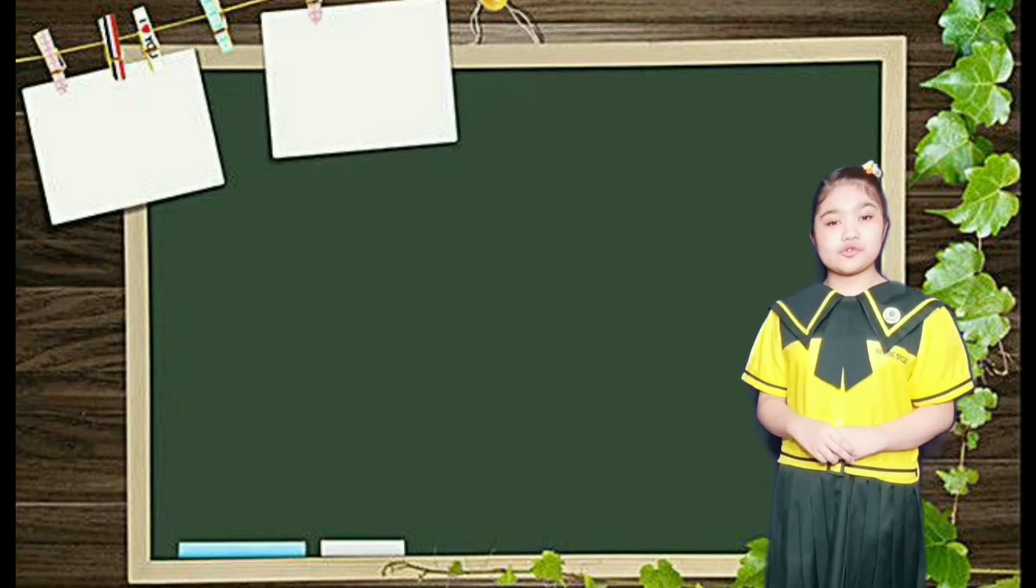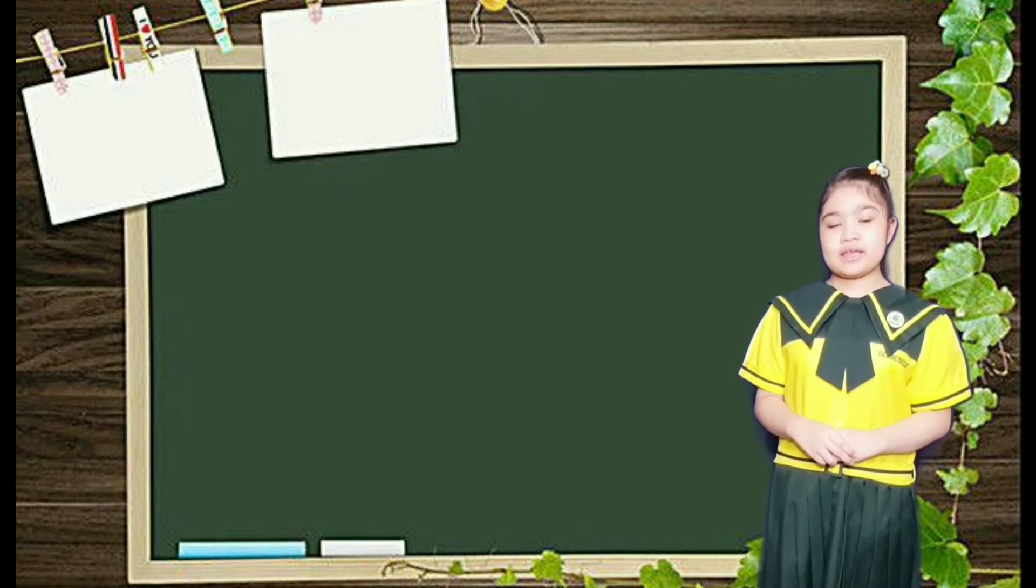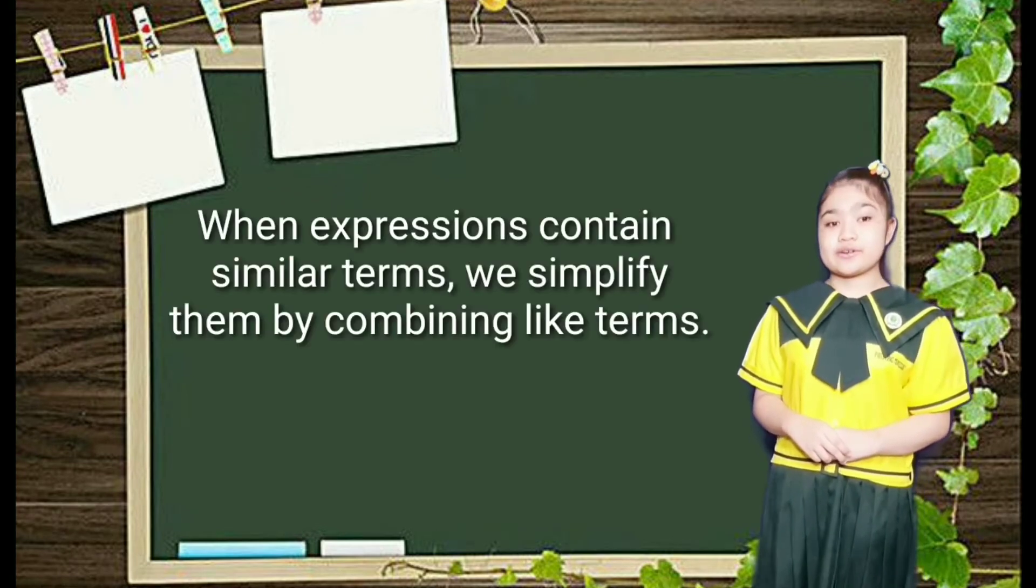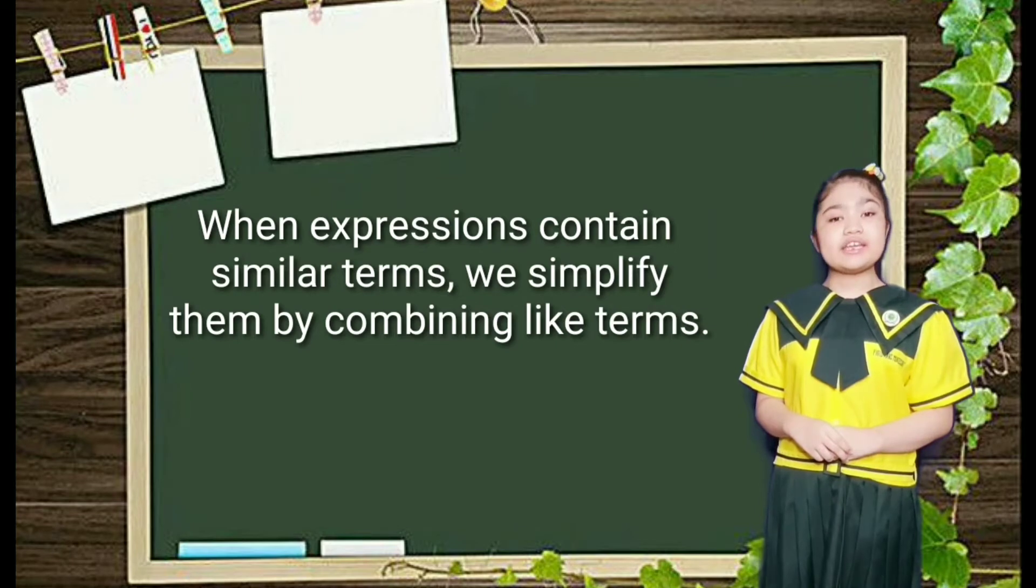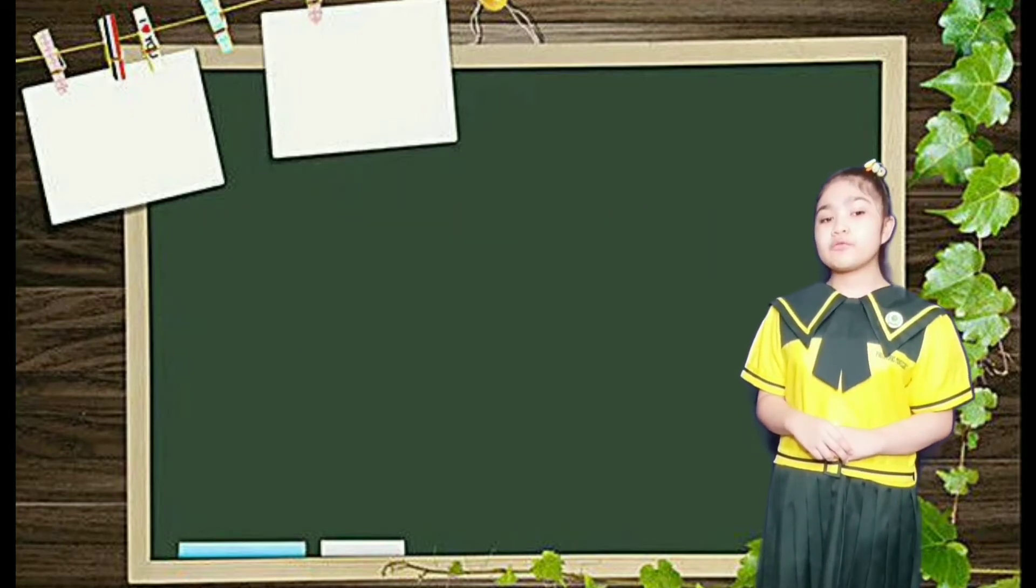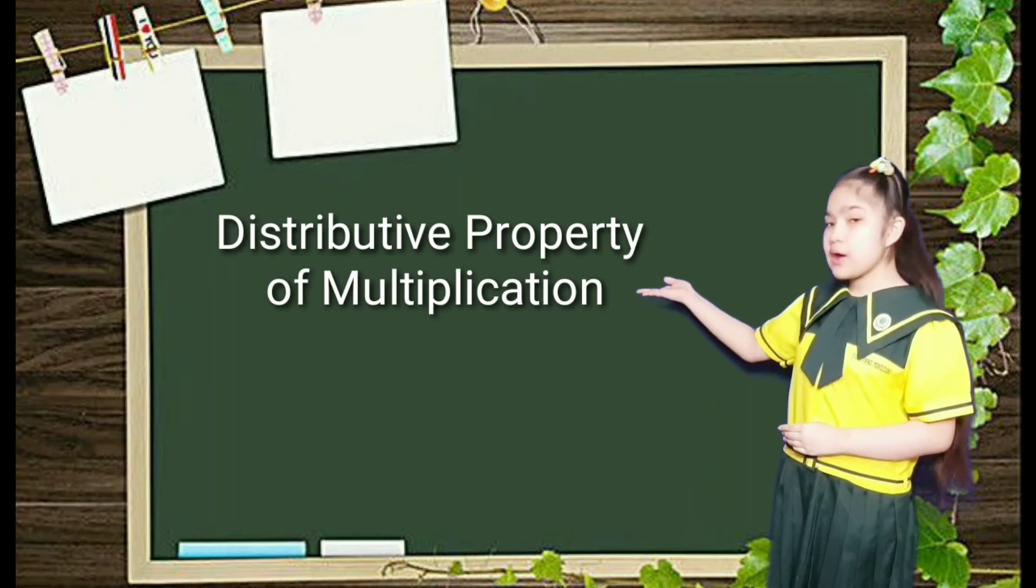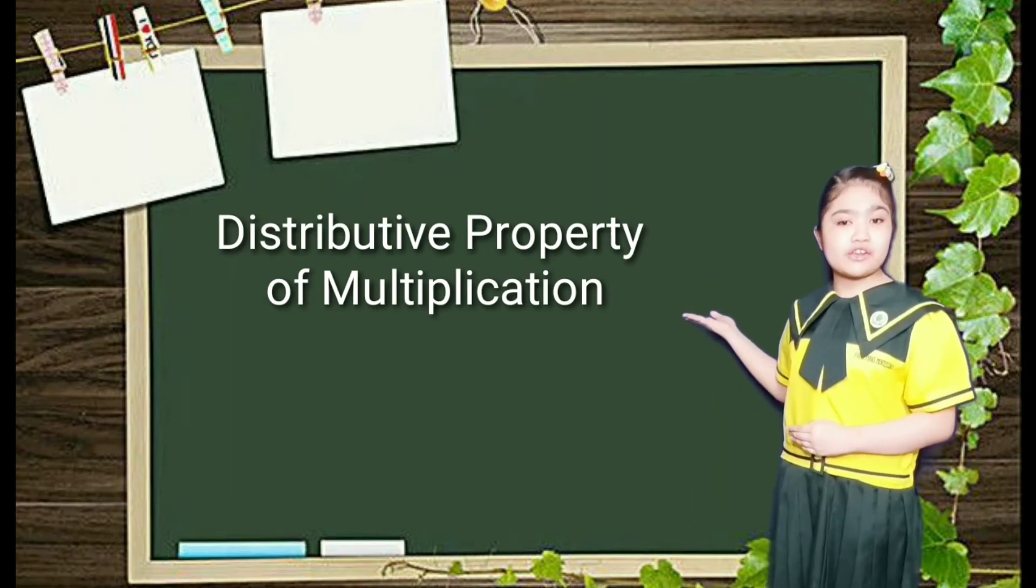Simplifying algebraic expressions. When expressions contain similar terms, we simplify them by combining like terms. One way of doing this is by using the distributive property of multiplication.